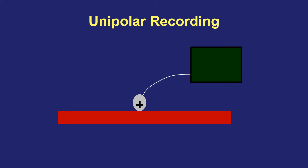Here's how we take a unipolar recording, with the anode shown and a wavefront moving from left to right past the electrode. When the wavefront is far away at the beginning and end of the recording, it is outside the field of view and the electrode records nothing. When the wavefront moves toward the electrode, you see a positive deflection. When the wavefront passes underneath the electrode and starts to move away, there is a rapid change in polarity and the deflection becomes negative until the wavefront is completely out of view.